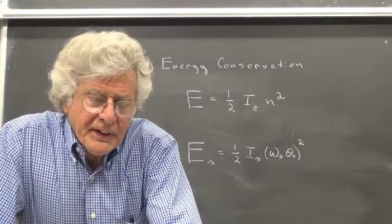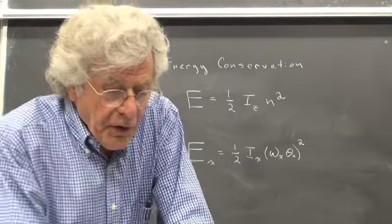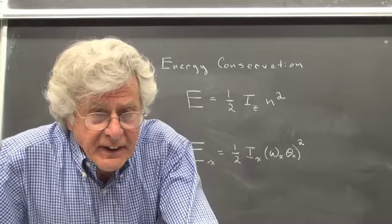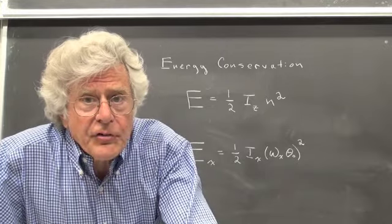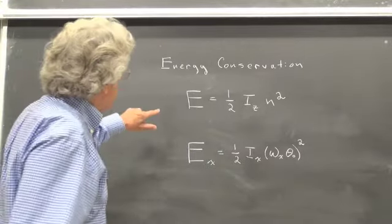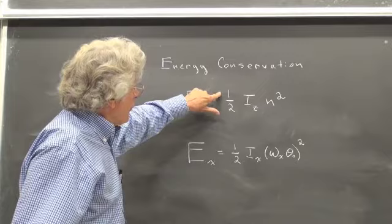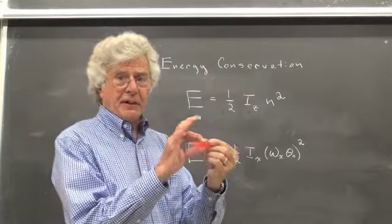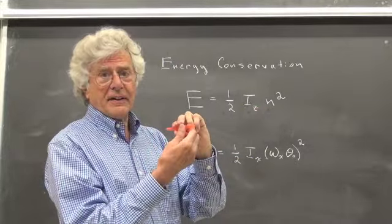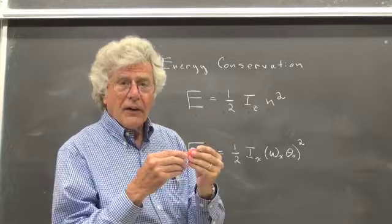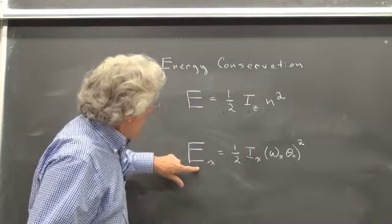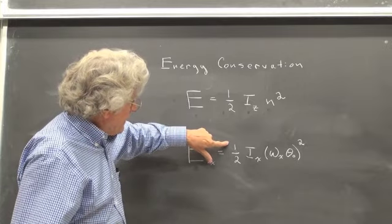The next step is based on energy conservation. Since the rattle back moves in such a way that the point of contact does not skid, the force applied to it does no work. Thus energy is conserved. The initial amount of energy in the rattle back is given by one half times the moment of inertia about the vertical axis times n, the angular velocity it initially has. As the oscillation grows — that is, the rotation about the short axis — that takes up energy.